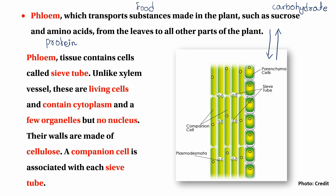In this video, we learn that xylem, phloem, and vascular tissue are used by vascular bundles. The vascular bundle is the core of the transport system in a vascular plant. The vascular bundle has two main components. If you like and subscribe to our channel, please like and subscribe.